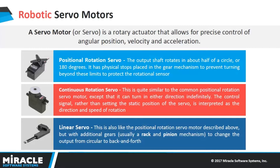We have three types of servo motor. The first is the positional rotation servo. It rotates about half a circuit, like 180 degrees. It has physical stops placed in the gear mechanism to prevent turning beyond these limits to protect the rotational sensors. These are found in robotic arms, legs, and heads.